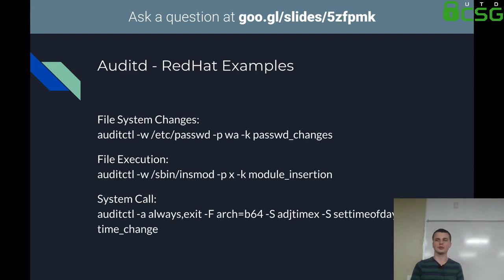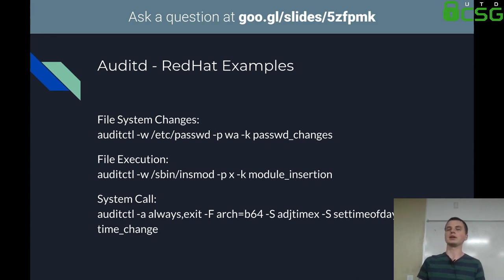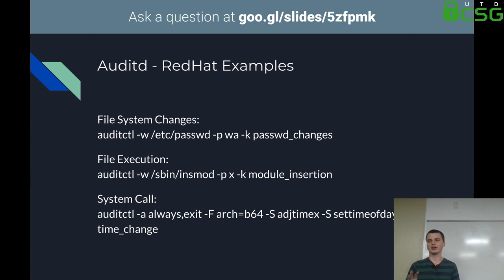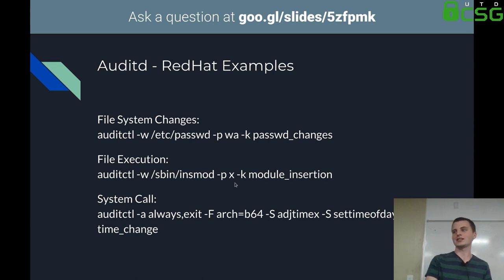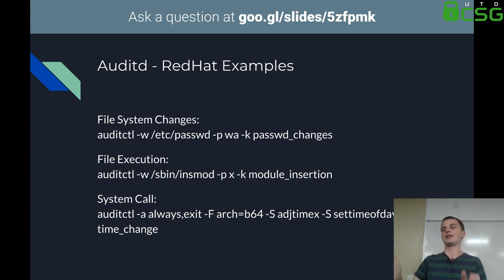Red Hat provides useful example rules. You can check files and what permissions are being used — for example, anyone who writes to /etc/passwd will be audited, and you can then go check it. Similarly for insmod: if you've never played with kernel modules, they're external code you can compile and run in the kernel, generally useful for device drivers. You can audit anytime someone executes insmod, capturing it as a 'module insertion' rule. This is really useful because modules can be used for backdoors — if you insert a malicious kernel module, you're running at a level below root.